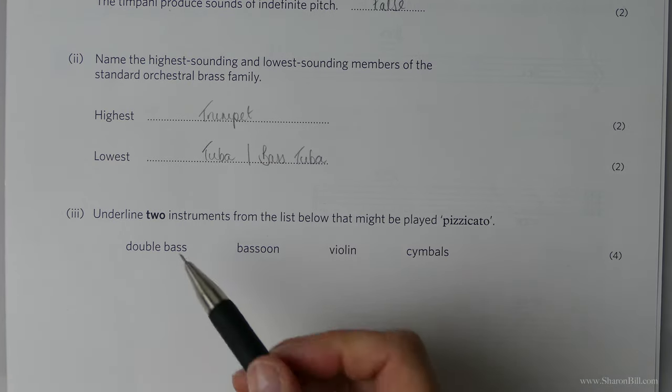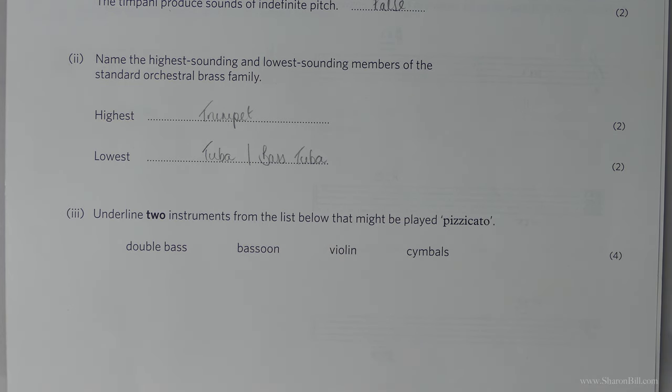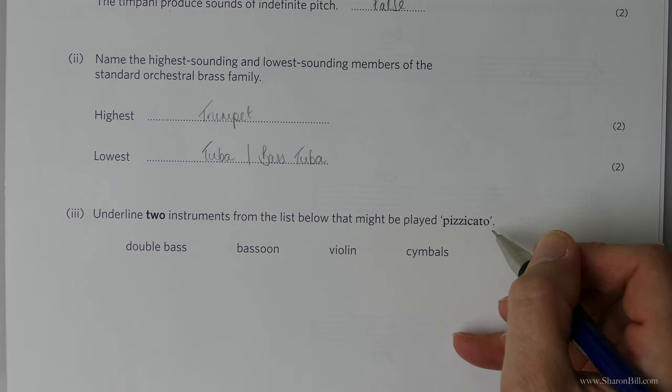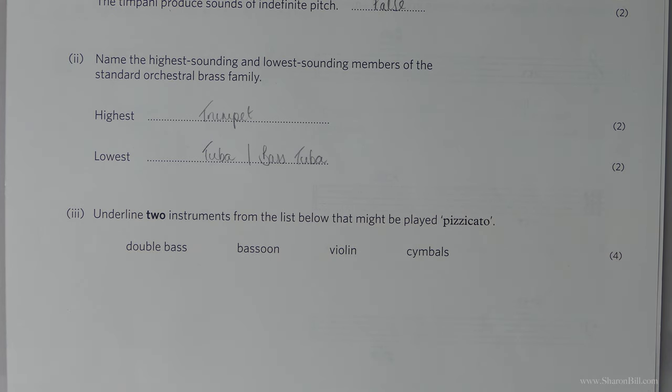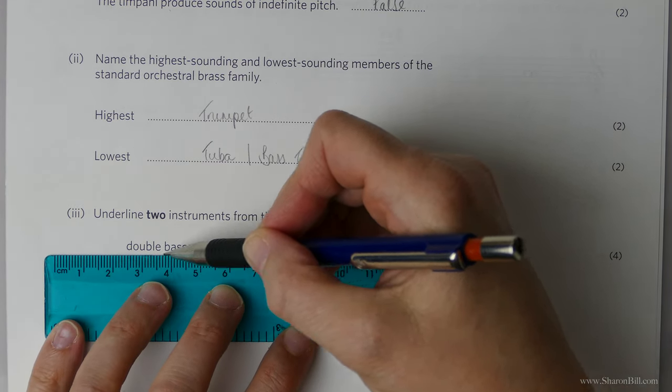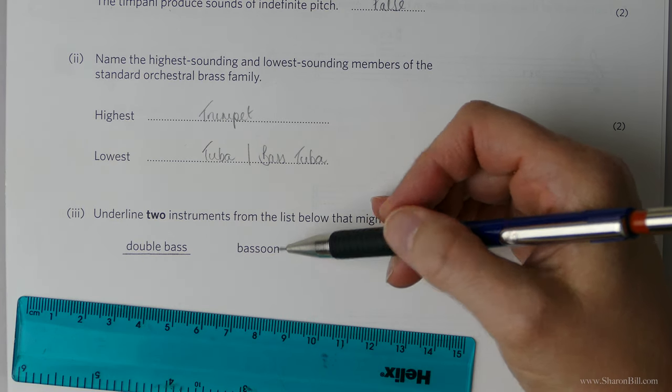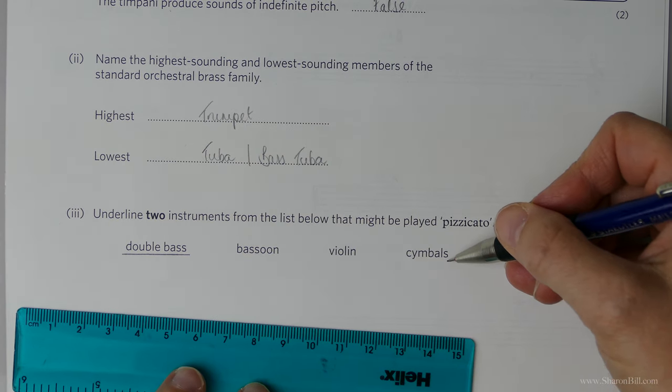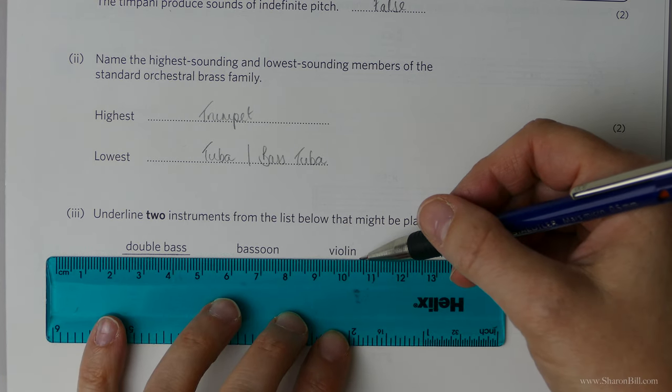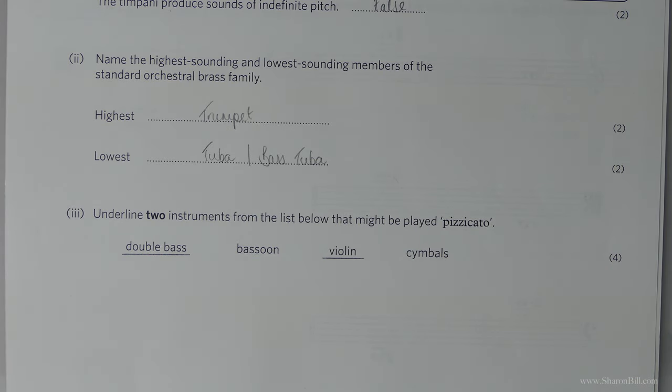Now then underline two instruments from the list below that might be played pizzicato. Pizzicato is a string term where you pluck the strings rather than using the bow. Obviously the double bass is a string instrument so we could do that. That can be pizzicato. Bassoon can't because that's a wind instrument and you blow it. Cymbals can't because you have to hit those or crash them. Violin is a string instrument so yes that can also be played pizzicato. There we go. That's the end of that question.